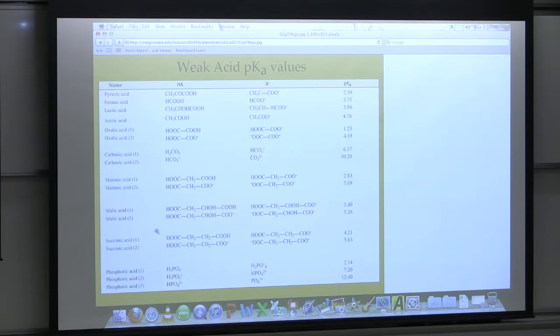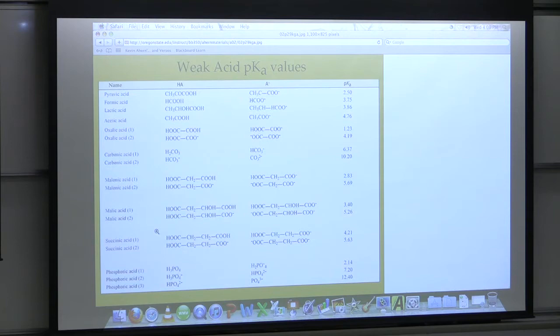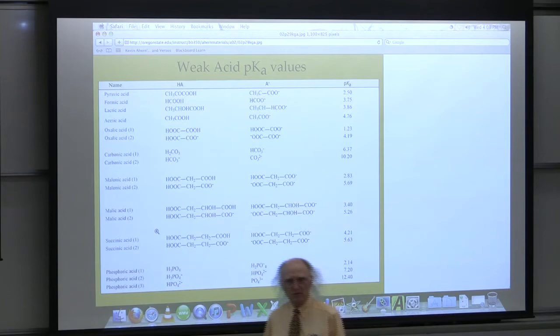Now, I'm not asking you to memorize this table. But this shows a list of several important weak acids in biochemistry. As you look at it, you're going to see something we haven't talked about yet — some of these weak acids have more than one group that can ionize. Let's start with a simple one: pyruvic acid, also called pyruvate.